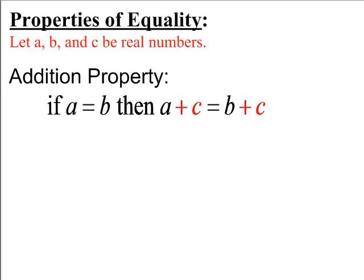So we have some properties of equality. If you have the statement that A equals B, then you can add C to both sides of that equality to still maintain equality. Let's come up with an example.